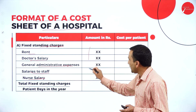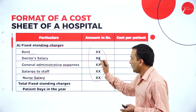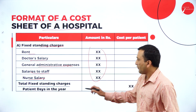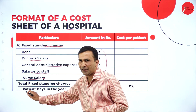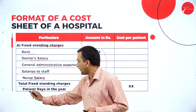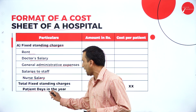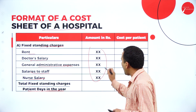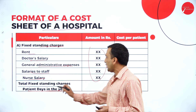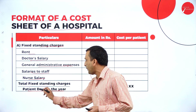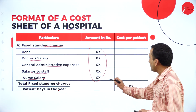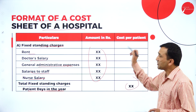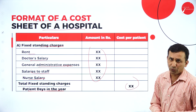After taking this total, we apply the number of patient days in a year. Taking this total divided by patient days in a year, we then get the rate cost per patient.